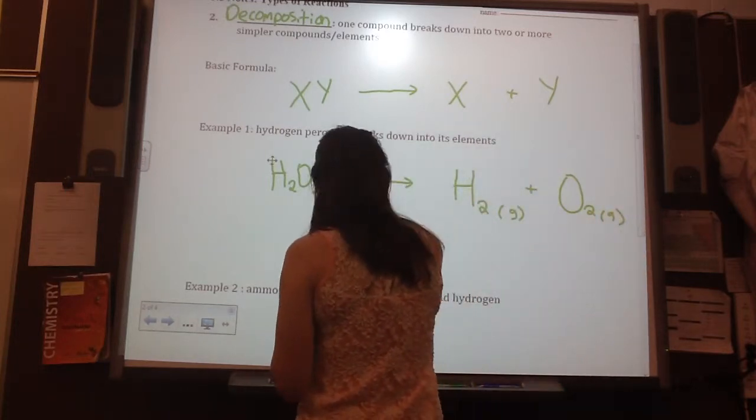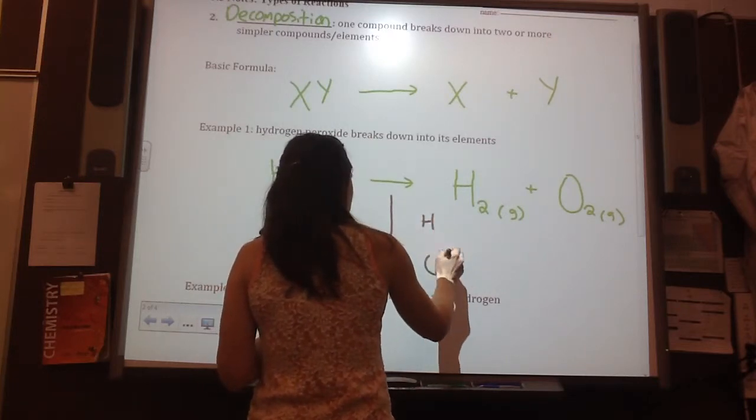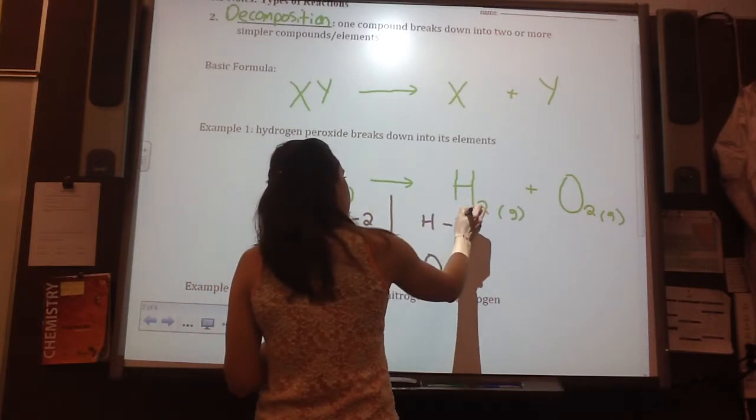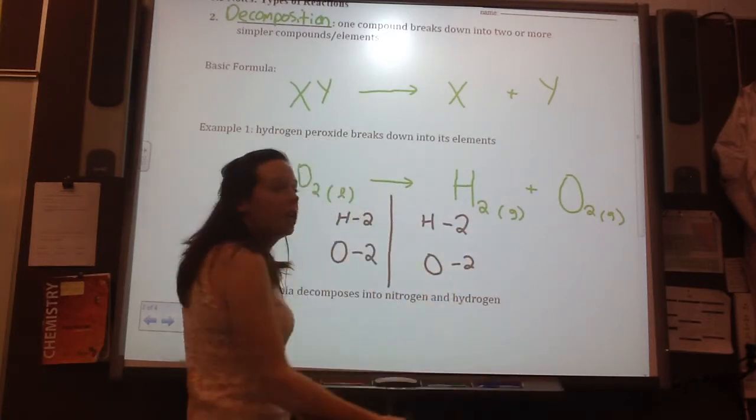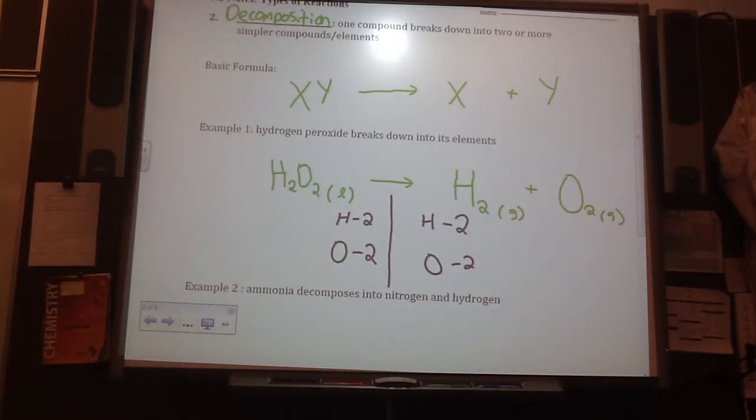So, now, we balance it. H's and O's. So, on this side, we have two of each. And this side, we have two of each. So, as Aiden asked yesterday, is there some equations where you don't have to do anything to it? Yeah. This is an example.